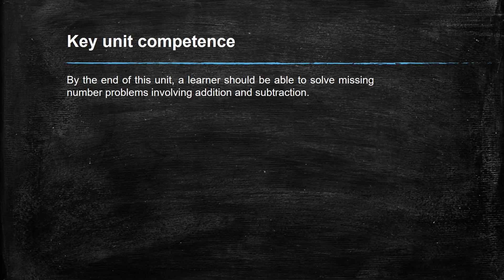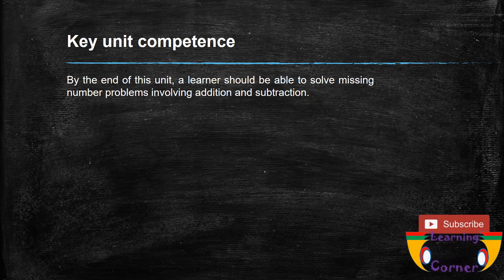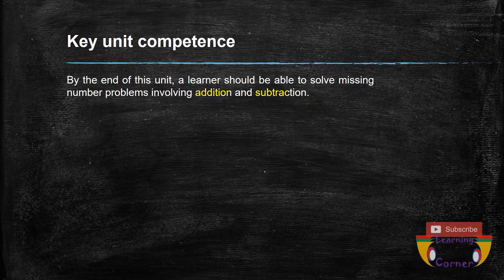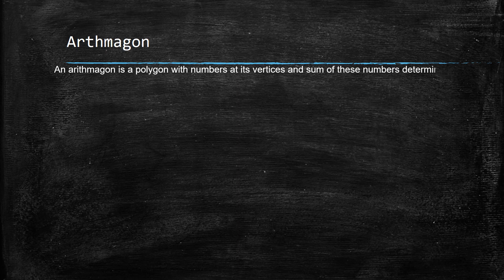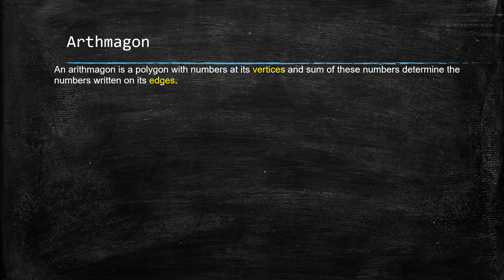By the end of this unit, you will be able to solve missing number problems involving addition and subtraction. We are going to add and subtract so that we can find the missing numbers. Let's have an arithmagon. What is an arithmagon? An arithmagon is a polygon with numbers at its vertices, and some of these numbers determine the numbers written on its edges. We have two parts: vertices and edges.